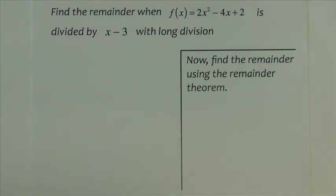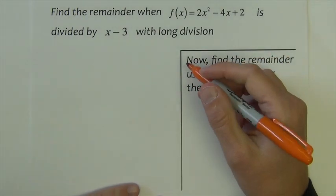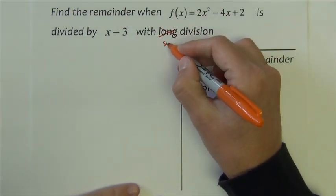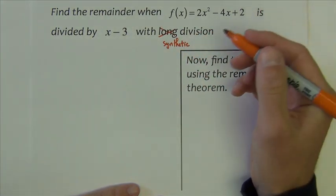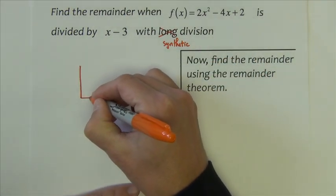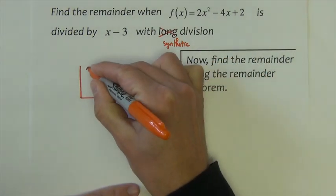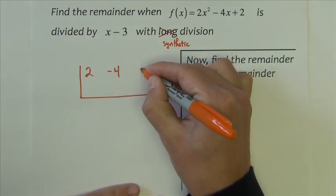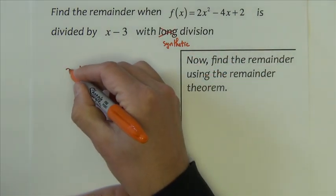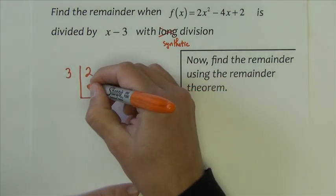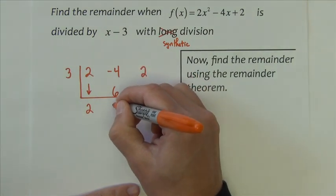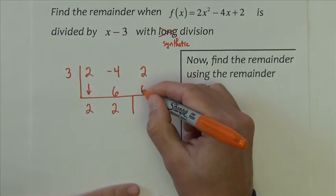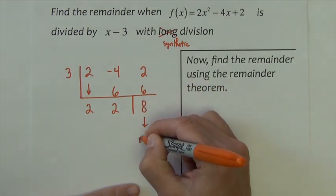Directions here say to find the remainder when 2x squared minus 4x plus 2 is divided by x minus 3 with long division. I'll tell you what, let's just change that to synthetic division just to make this a little bit faster. So we've got 2x squared minus 4x plus 2. Our zero is 3. Here's the procedure again. We bring down the 2 and we multiply. We add. We multiply. We add. There's our remainder.